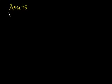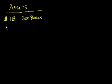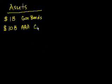So on the assets side, let's say that a bank has $1 billion in US government bonds — I'm just throwing that in as filler to show you there could be many different types of assets. Let's say it also has $10 billion in AAA corporate bonds. These are loans to really solvent, very credit-worthy companies with really good cash flows, so there's very little chance of them defaulting on their loans.